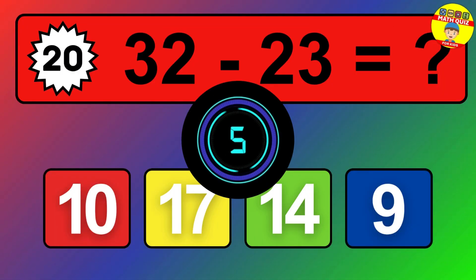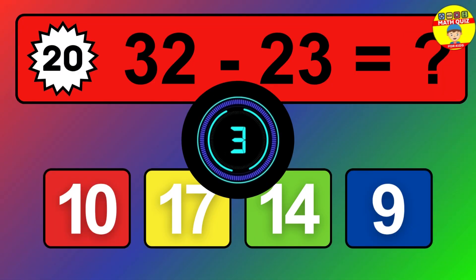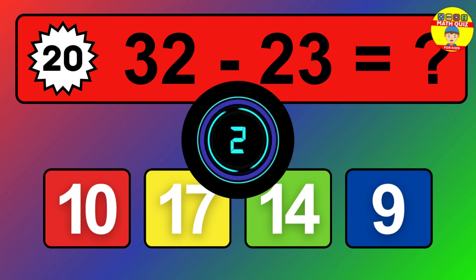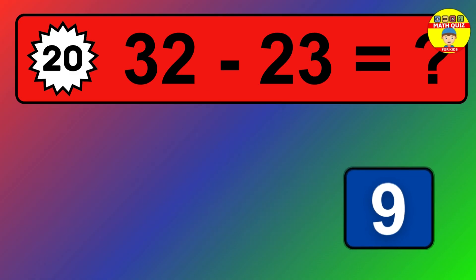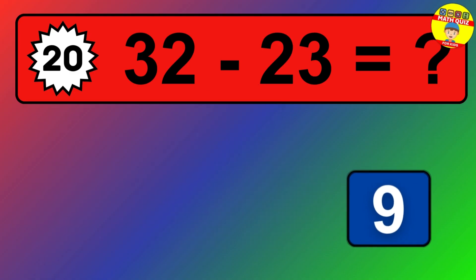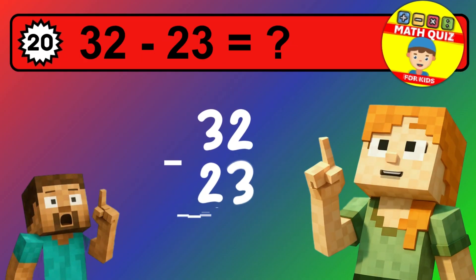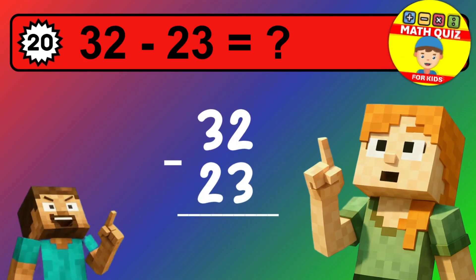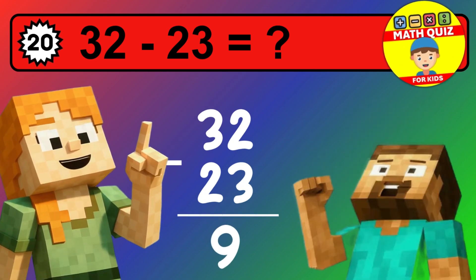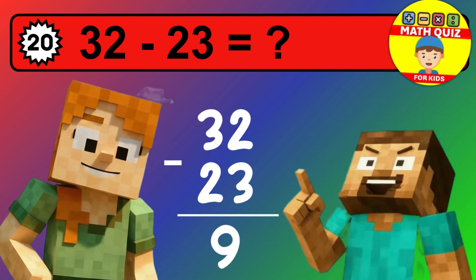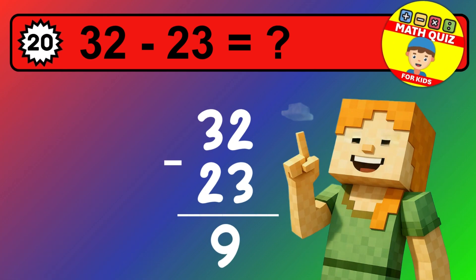We start with the units. 6 minus 8 is not possible, so we need to regroup. We take one 10 from the tens column. Now we have one tens, and the units become 16. Now we subtract. 16 minus 8 is 8. Then we go to the tens. 1 minus 1 is 0. The final answer is 8.